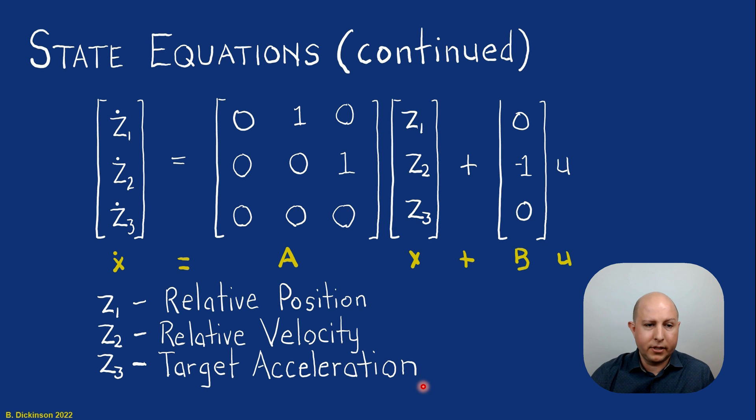So here are the state equations again in matrix form, the linear time invariant kinematics: z1 relative position, z2 relative velocity, and z3 target acceleration.